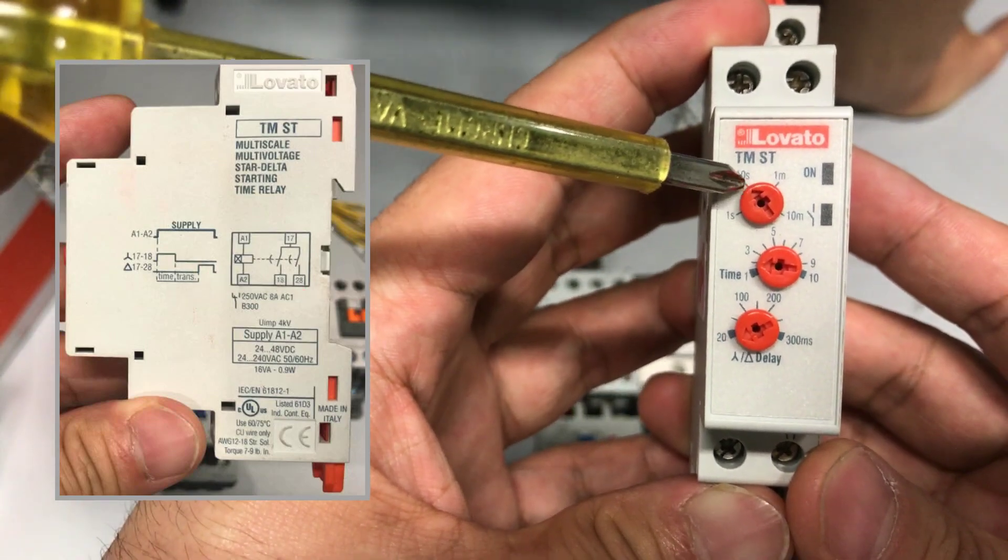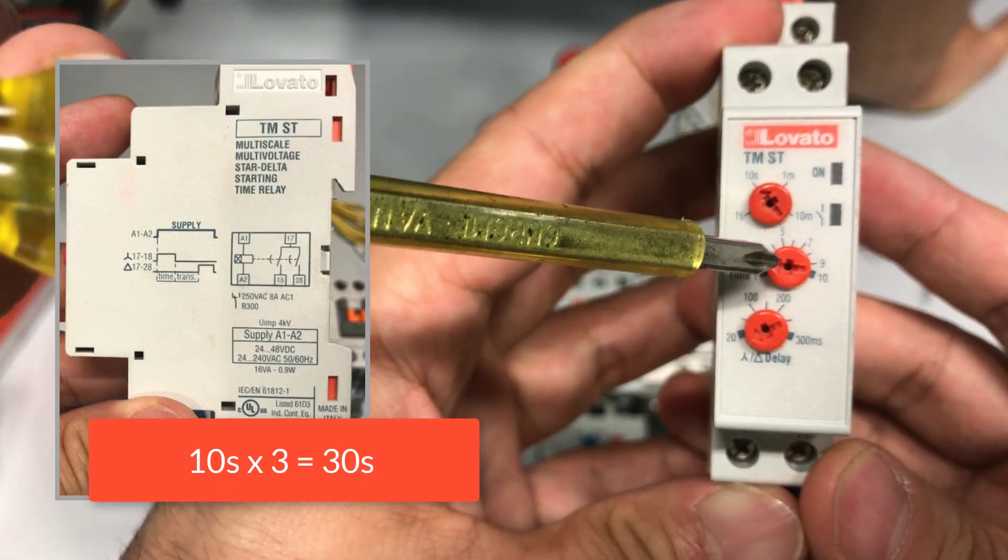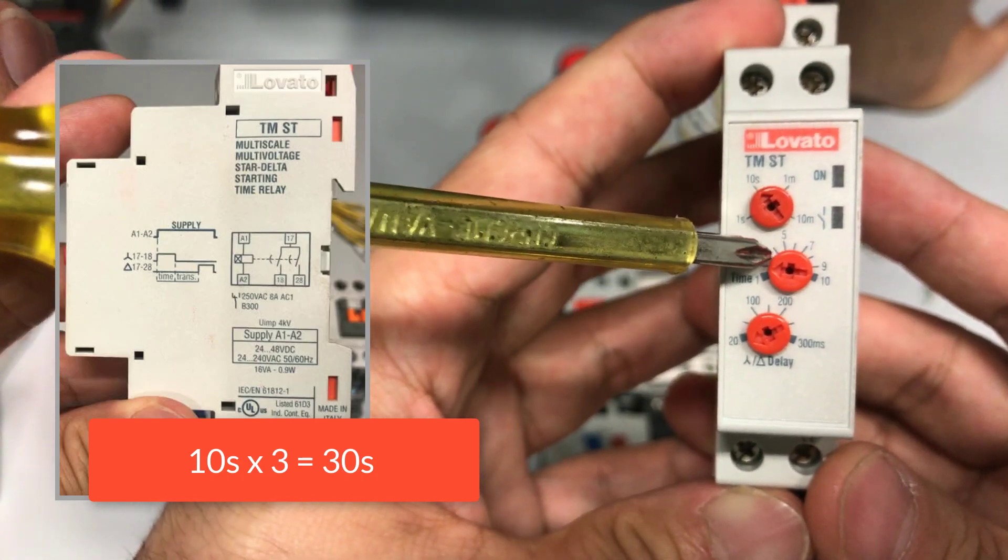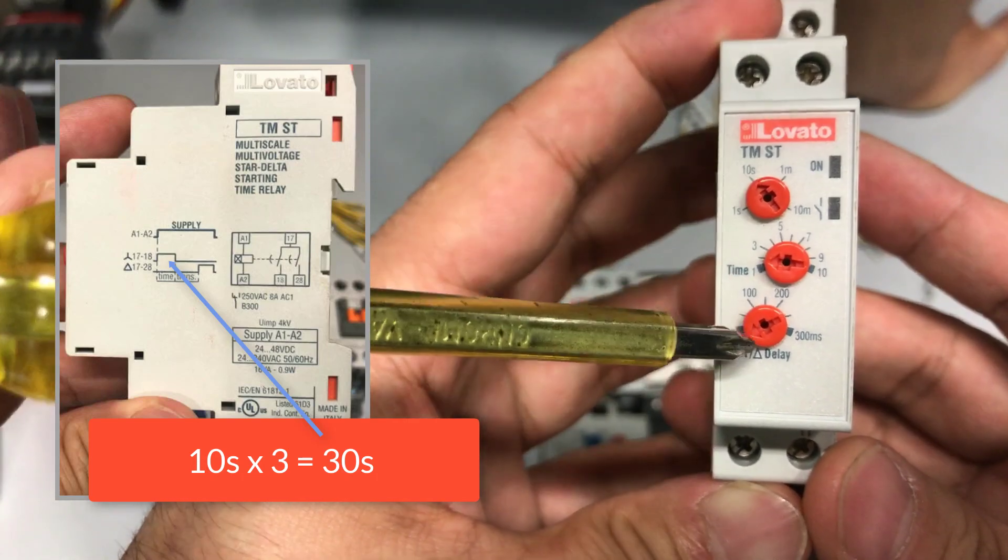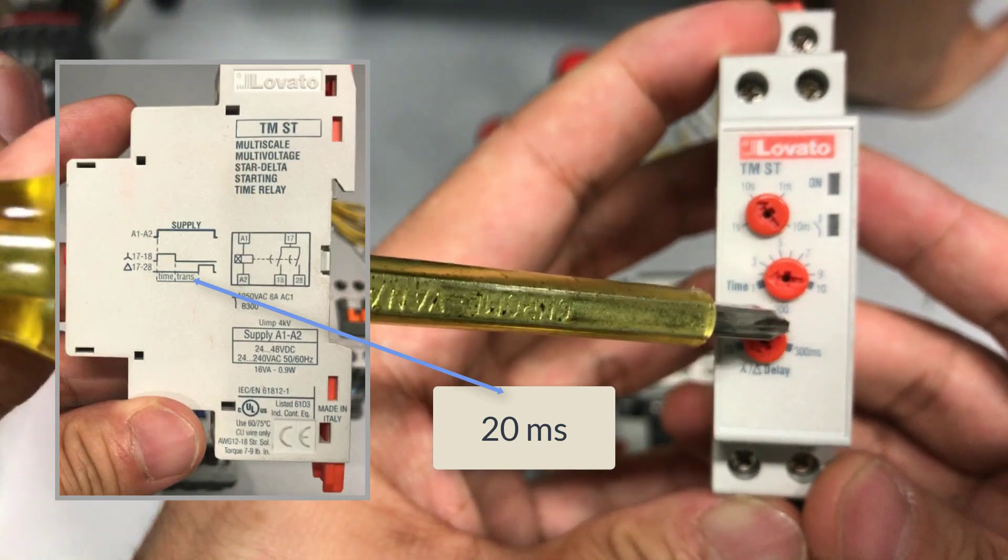The last setting is the period to delay between the star and the delta. For example, if we set this to 10 seconds, set this time to be 3, this will mean that the star contactor will be on for 30 seconds, so 10 multiplied by 3. The delay here has a minimum of 20 milliseconds.